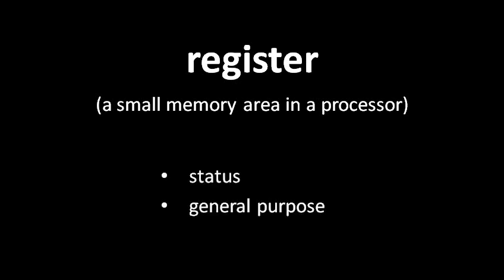Inside a CPU itself, there are some very small storage locations called registers. Registers serve basically two purposes: status registers and general purpose registers. The status registers contain little pieces of data that concern the operation of the CPU itself. For example, some CPUs operate in different modes, so such a CPU will typically have a register storing bits that designate what mode the CPU is in. When a CPU is executing instructions, it needs to keep track of the address of where it should get its next instruction — the register which holds this address is usually called the program counter. When you execute a jump instruction, what you are doing is modifying the program counter, thereby causing the CPU to change where it's going to get its next instruction.